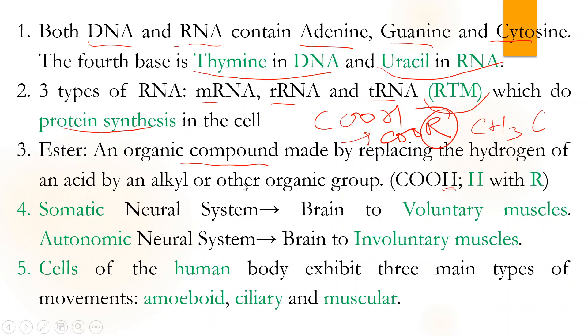Next is somatic neural system. The message is processed by the brain, and it controls voluntary muscles.